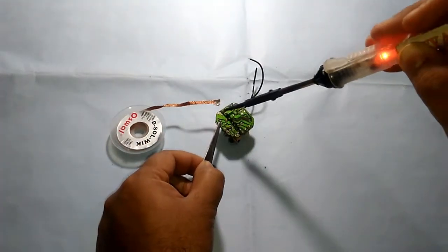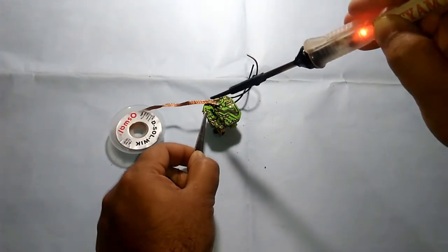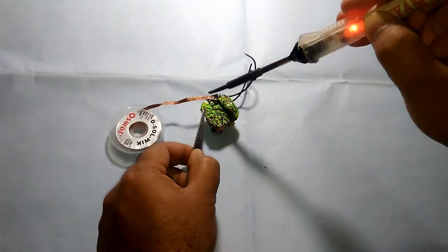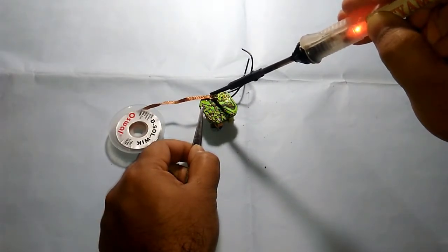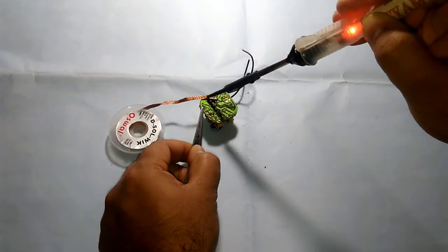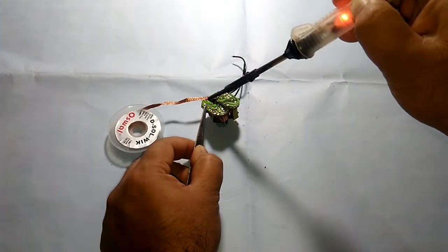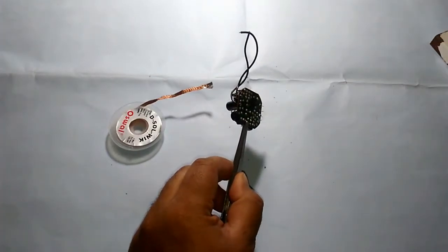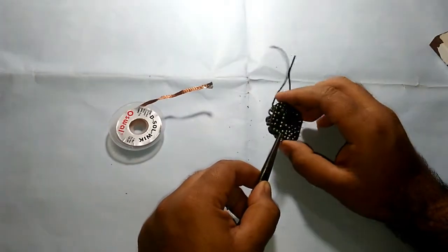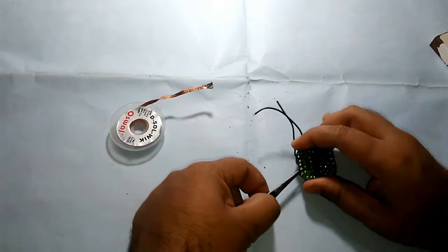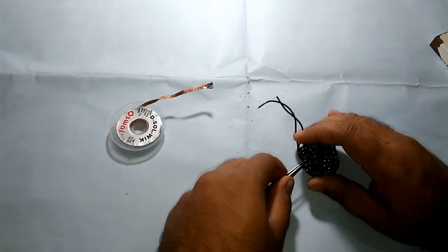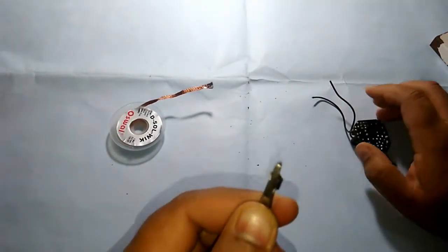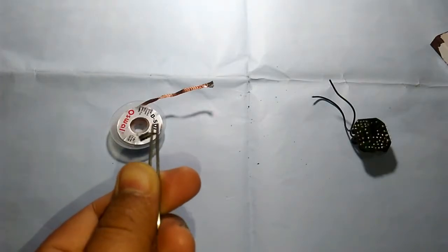All right. Now the other one is right there. Put the wick on it. And here we go. Now you can simply pull out the diode. So here it is. The diode is out.